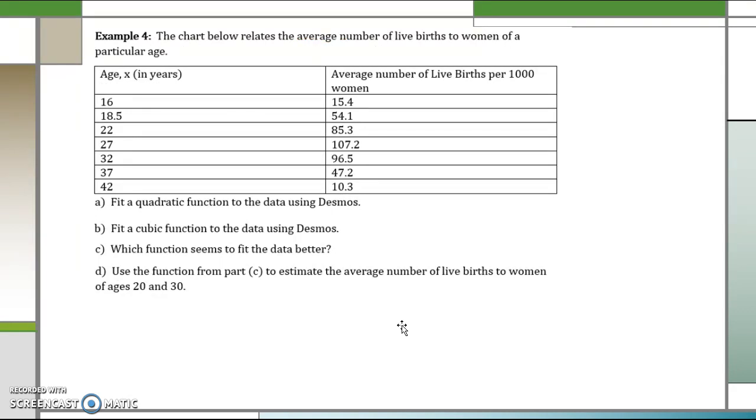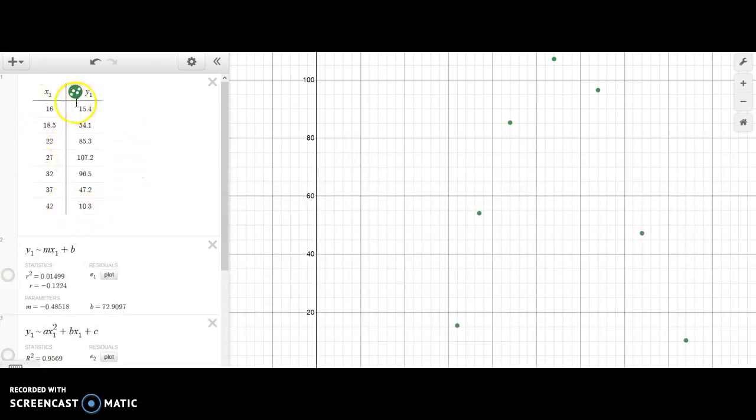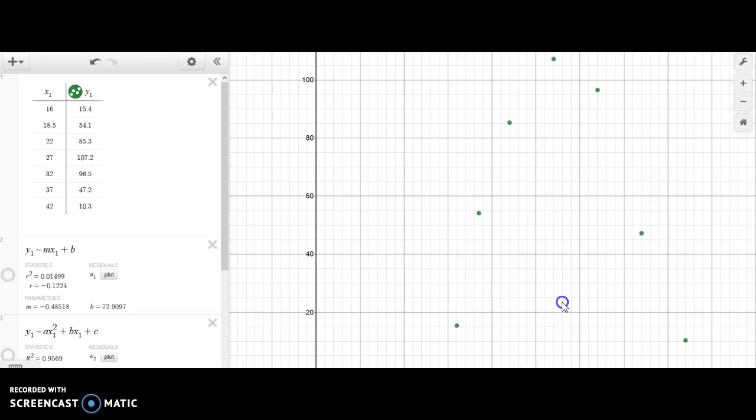The chart below relates the average number of live births to women of a particular age. Find a quadratic function to the data using Desmos, a cubic function to the data using Desmos, and then we'll answer a couple of questions here. So I'm going to transfer this data over to Desmos and then we'll talk about it.